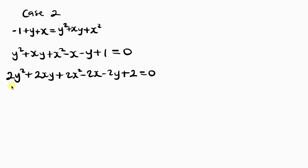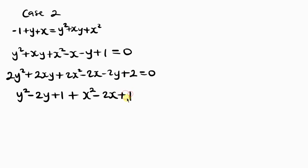Now watch carefully. From the 2y squared, I take one y squared along with minus 2y and plus 1, and from the 2x squared, I take one x squared along with minus 2x and plus 1. Then the remaining terms are y squared plus 2xy plus x squared. This gives us three grouped expressions ready to factor.